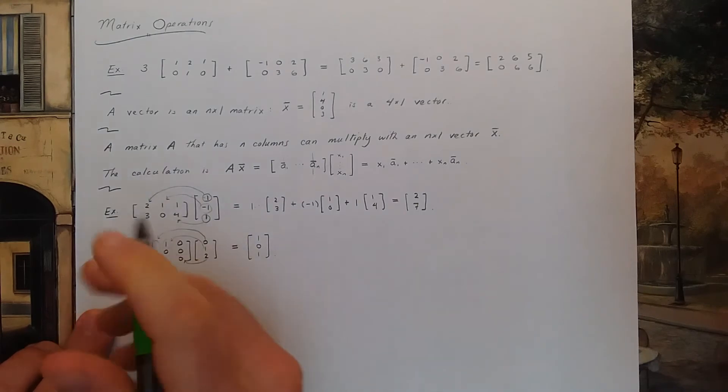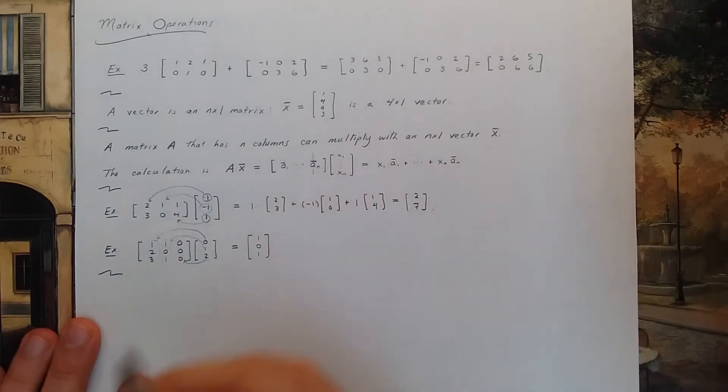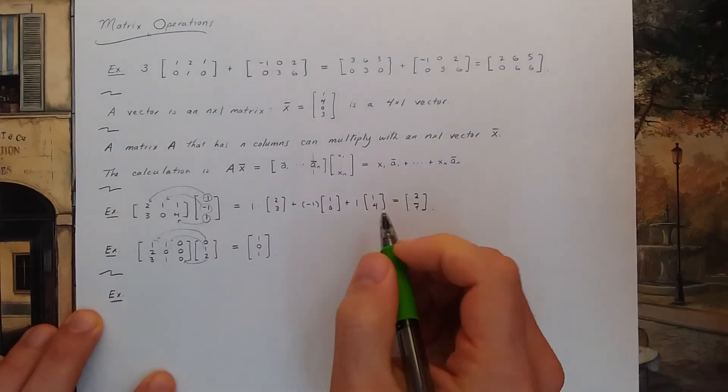Now the reason that matrix multiplication is defined this way is in part because it'll help us write linear systems as matrix multiplications. So let's finish this video with two examples of that process.